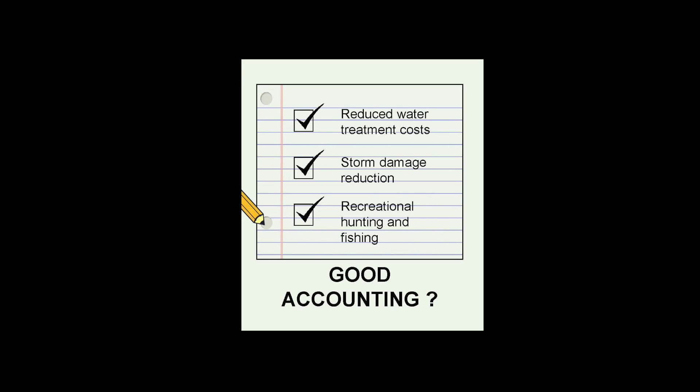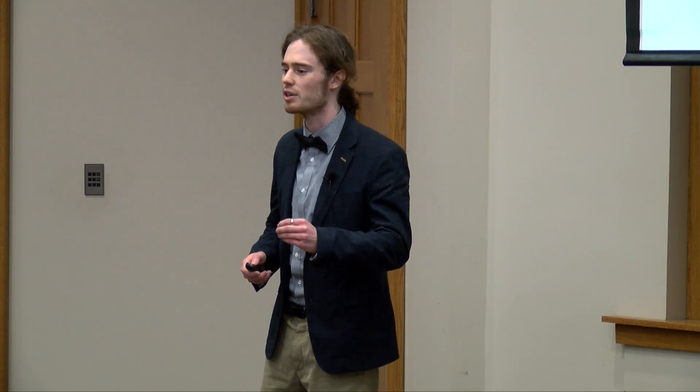So, our research is using the final ecosystem goods and services classification system to assess the benefits of a river diversion into a swamp setting. Now, because we're measuring ecosystem services as benefits and not monetary transactions, we need first a means of understanding which biophysical parameters are important in producing human value.